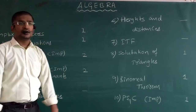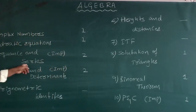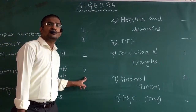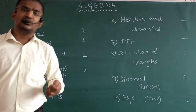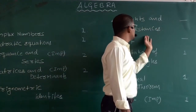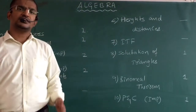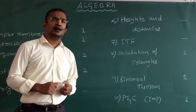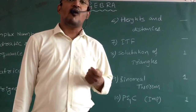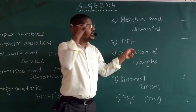Regarding algebra: sequence and series has 2 questions, making it a compulsory chapter — you cannot neglect it. Matrices and determinants also has 2 questions and is very important. But trigonometric identities, heights and distances, and inverse trig functions — this time, in JEE January 7, 2020, morning first shift, they did not ask a single question from these three topics.